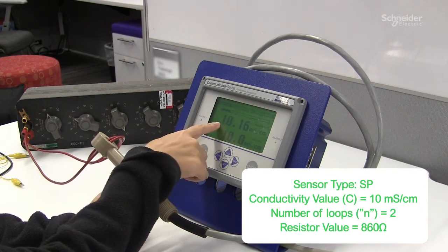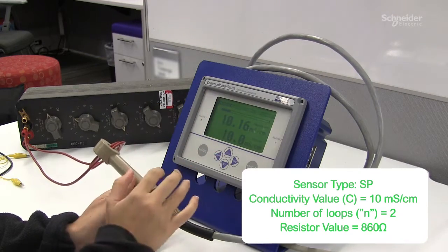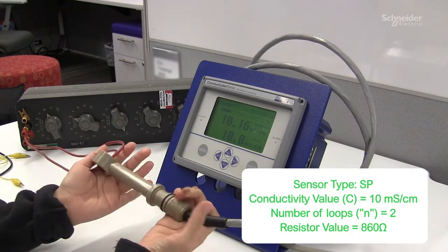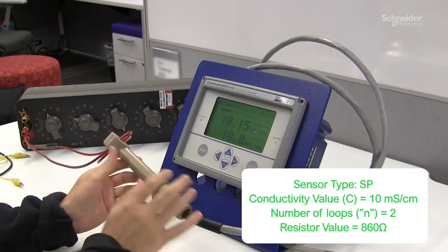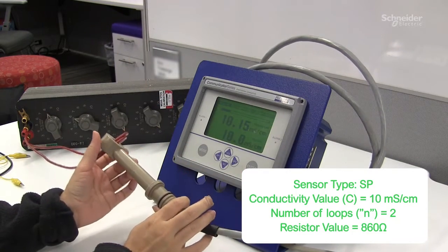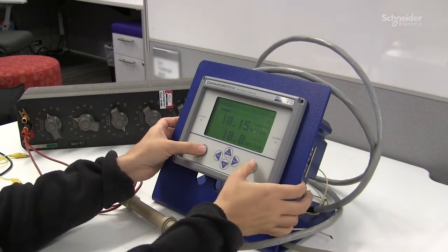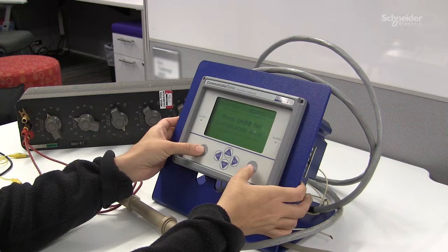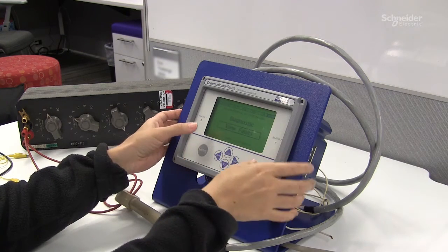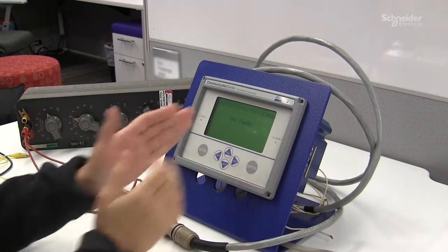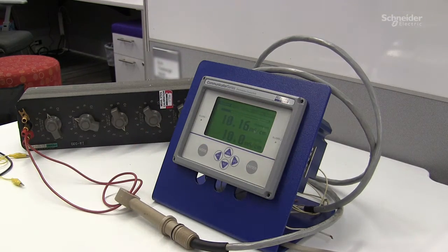There it is. So now we have confirmed that our analyzer and A71 EC sensor, that is our complete conductivity system, has been calibrated and is working correctly and we have no more faults displayed. You can still confirm that going back to the diagnostic menu, view faults, and it is working perfectly. Thank you for watching.